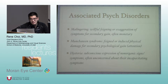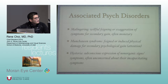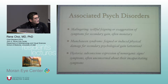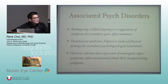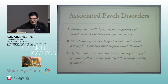Associated psychiatric disorders the BCSC wants you to know include malingering — the willful feigning or exaggeration of symptoms for secondary gain, often monetary. Munchausen syndrome — feigned or induced physical damage for secondary psychological gain such as getting attention from a physician. And hysteria — a subconscious expression of non-organic signs and symptoms, where patients are often unconcerned about their symptoms, which is the distinguishing feature.